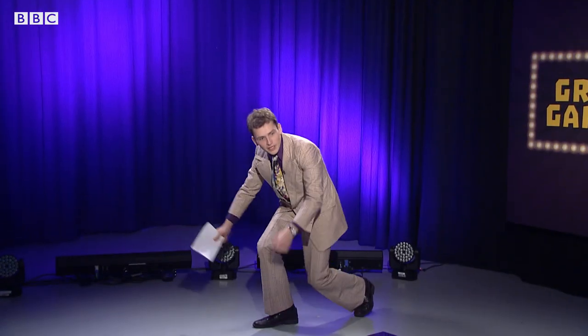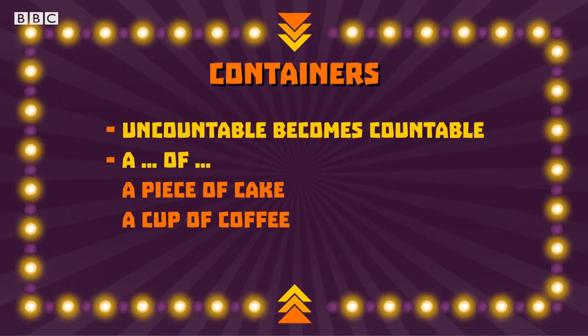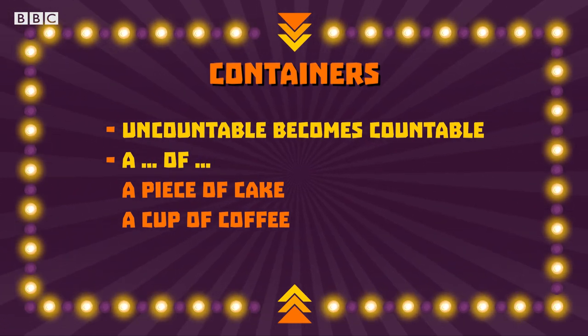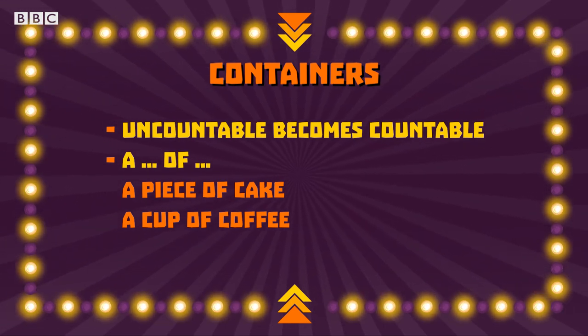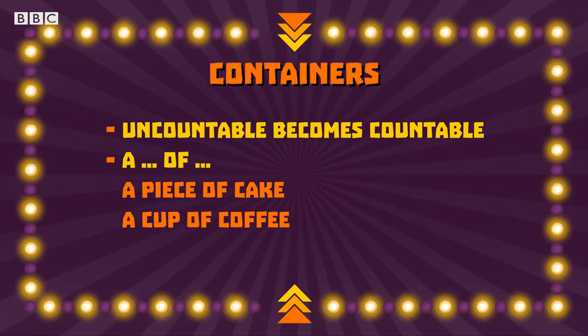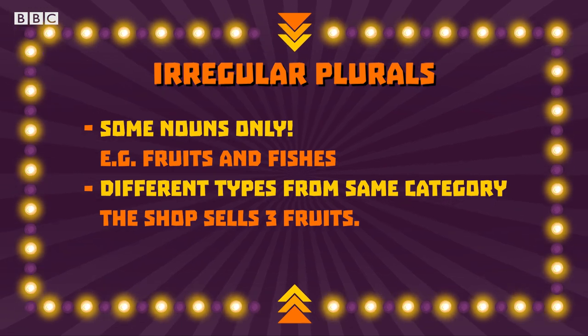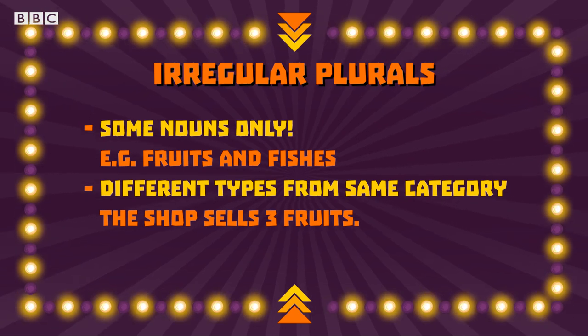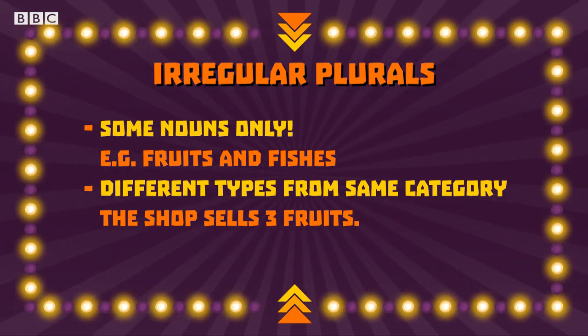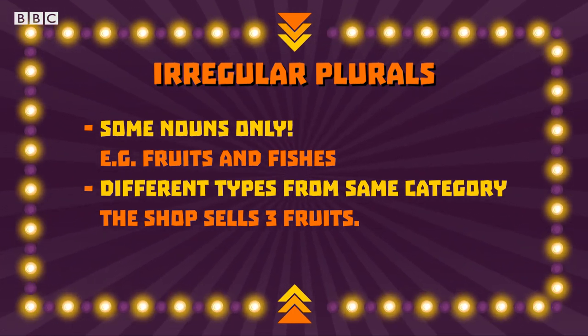Will, she's cheating. Well, so you keep saying, but do you have any evidence? I literally just filmed it on my phone. Put that away. To make an uncountable noun countable, we need to use a container — an expression commonly using 'a' and 'of', for example, 'a piece of cake' or 'a cup of coffee.' Secondly, some nouns such as fruit and fish have an irregular plural — fruits and fishes — used when referring to a number of different types of thing from the same category. For example, 'the shop sells three fruits: apples, bananas and oranges.' Well done, Yun — another fantastic round and another ten points.